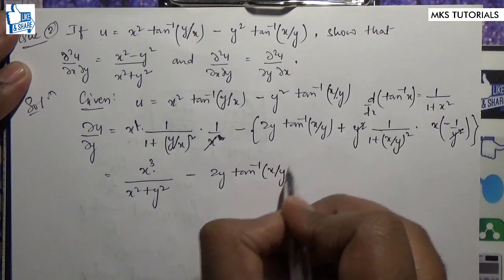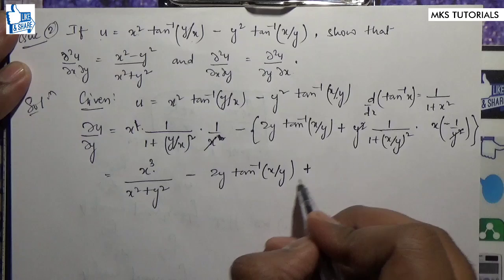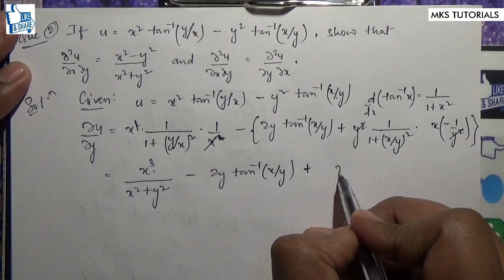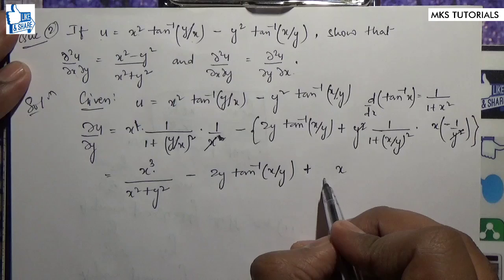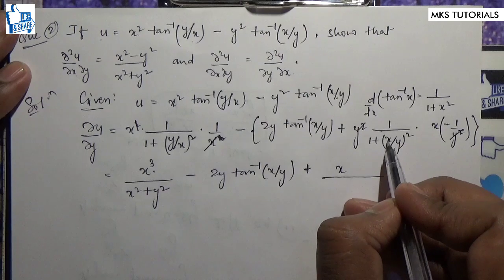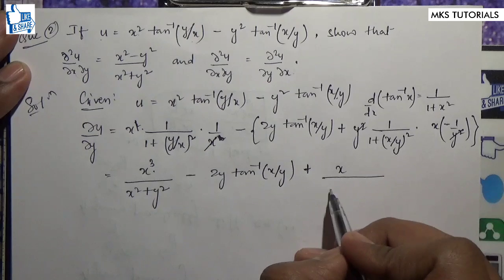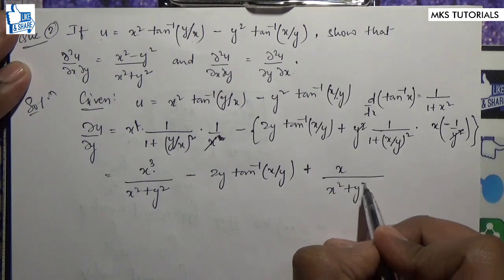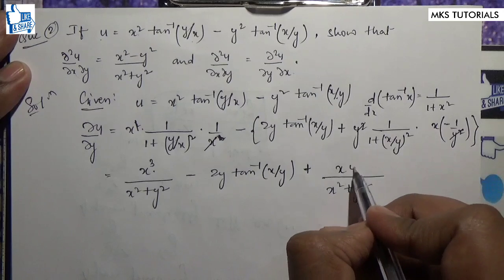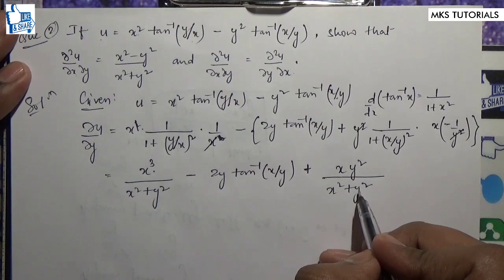Here we have x, x, x, y — and the negative here is going to be positive. So this one is plus x; here we have x²y², so y² will become x² plus y². That y² will cancel, giving x·y²/(x²+y²).